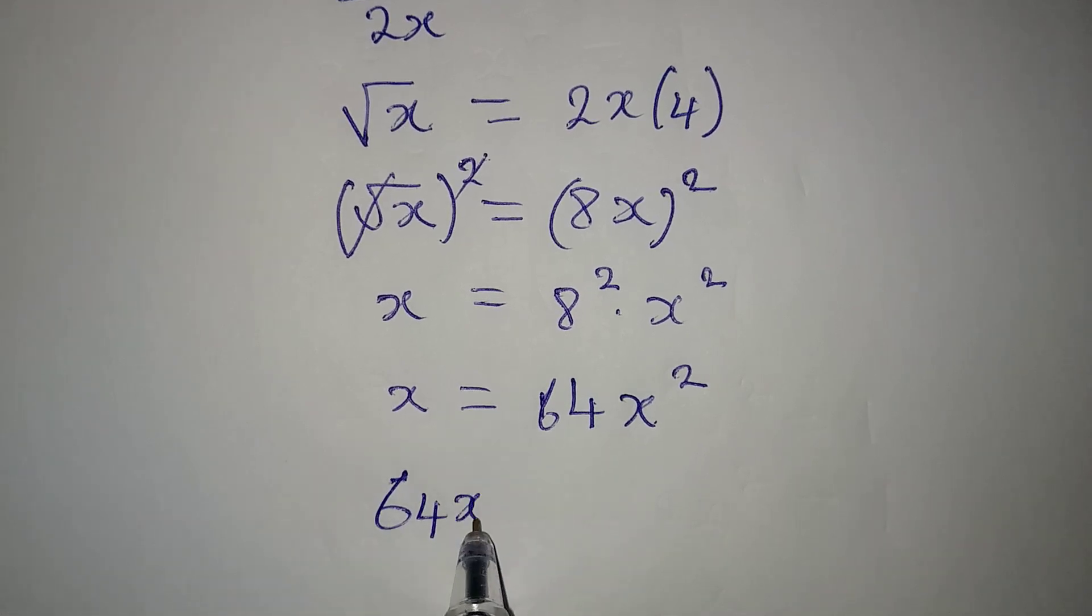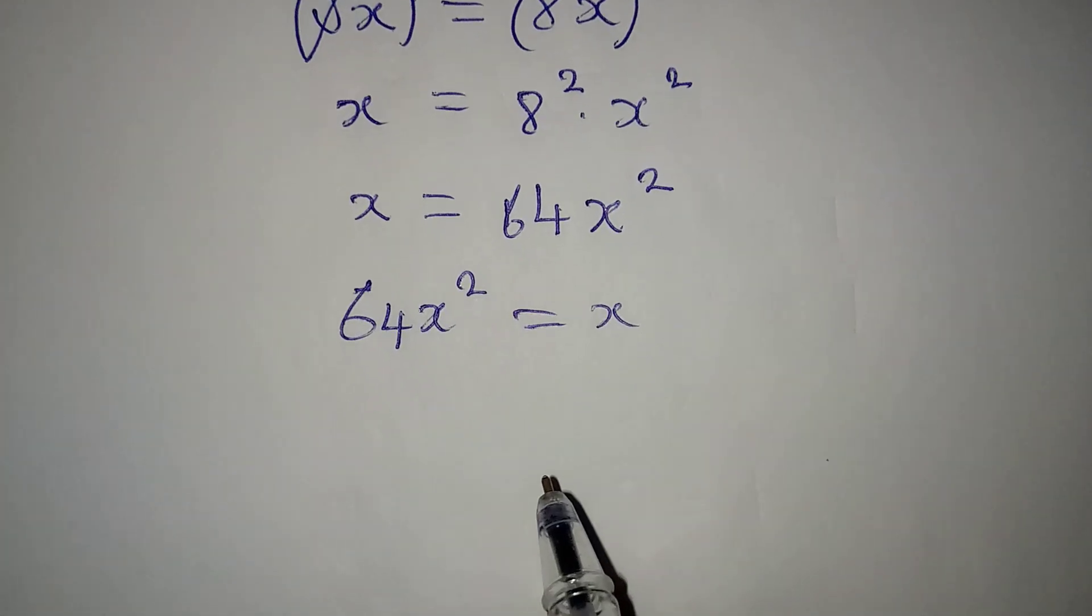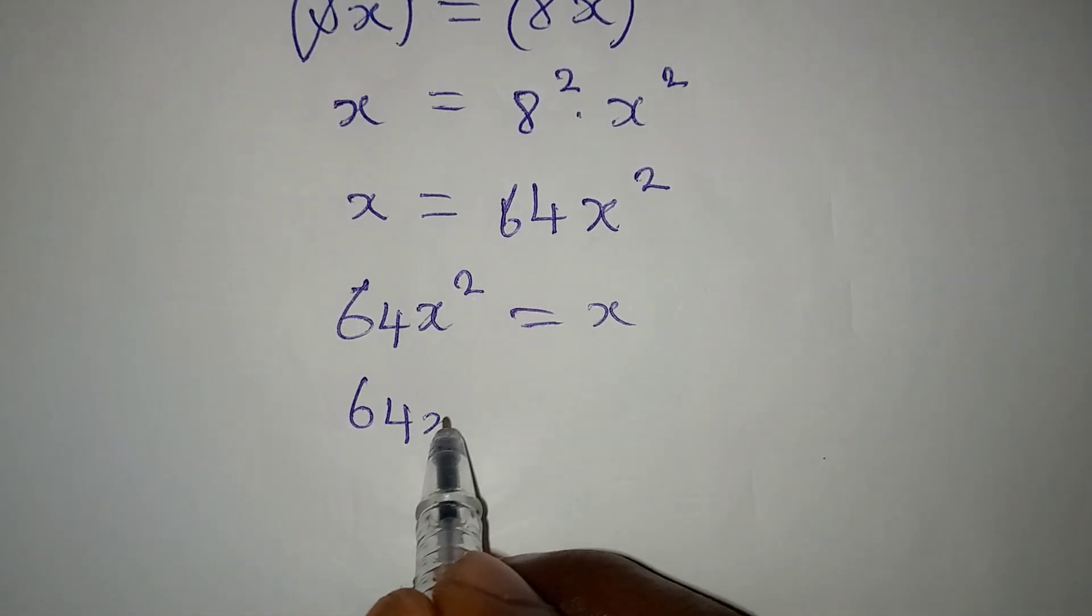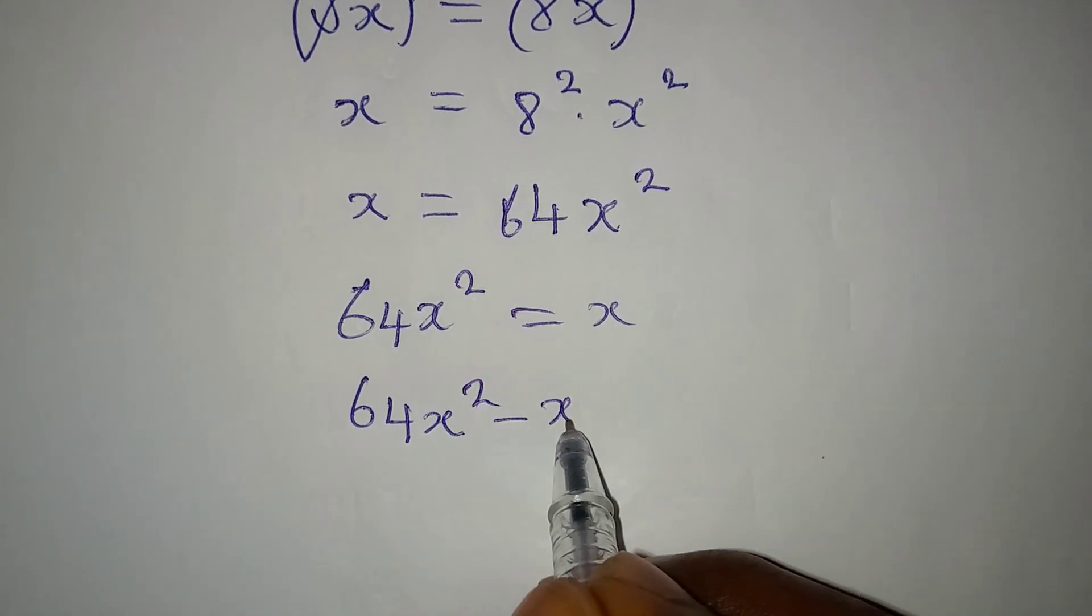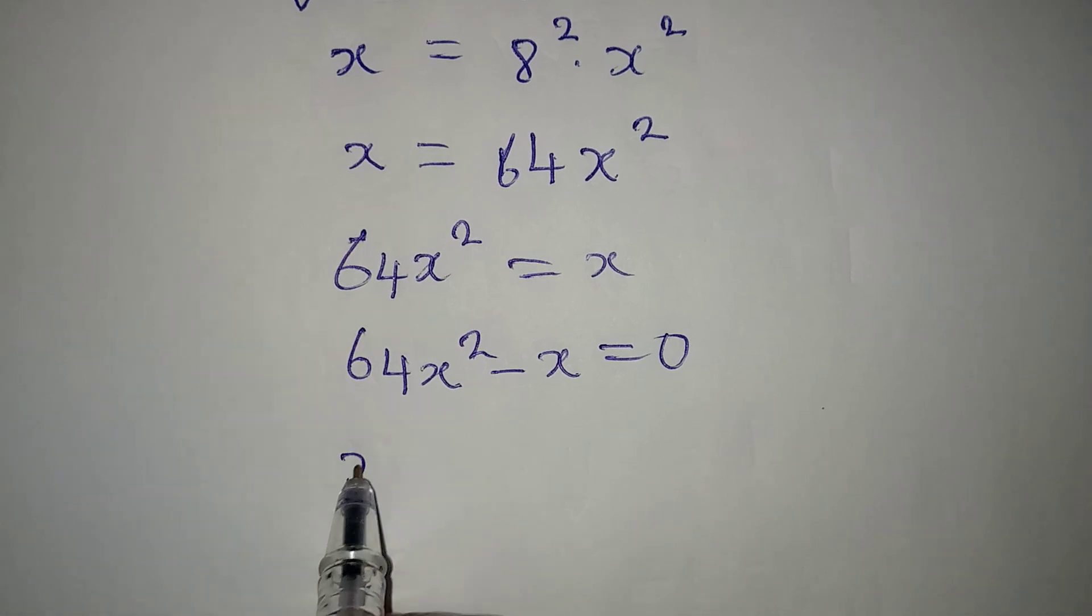Now 64x squared minus x is equal to 0. Factor out x.